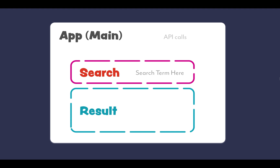Welcome back. In this tutorial we will be working on the basic UI and creating components. Before that let's talk about how we are going to manage the state and which components will manage which state. We have the main parent component which is the app component, responsible for API calls. We'll have a search component to get the text and a result component to display our result.